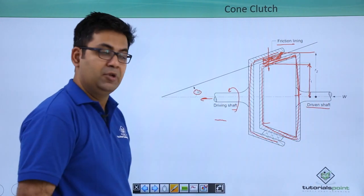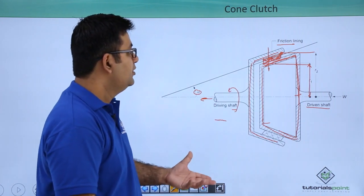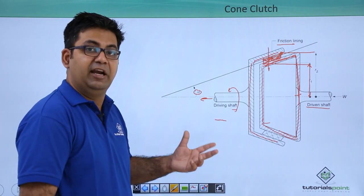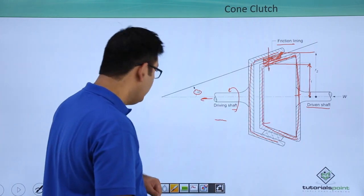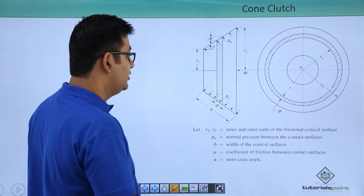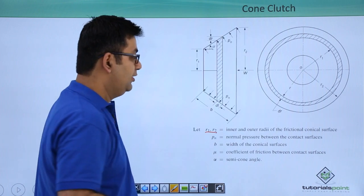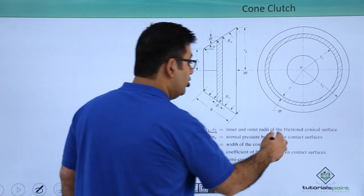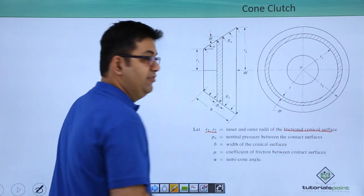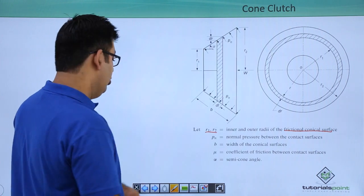So r1 and r2 are the inner and outer radii of the frictional conical surface. So if you go back a bit, this is how it is - this is the surface.